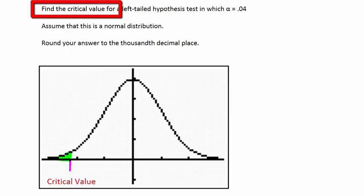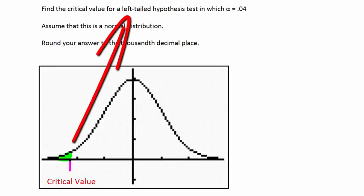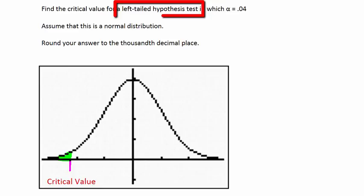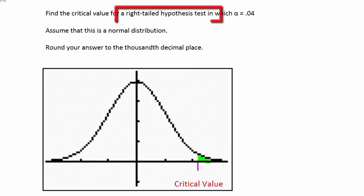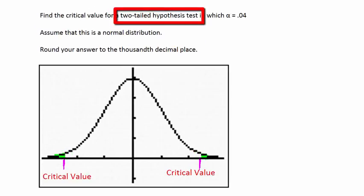When finding the critical value for a given alpha in the normal distribution, one needs to understand that the tail in which the hypothesis test is being performed will change the answer significantly. Hypothesis tests can be either left-tailed tests, right-tailed tests, or two-tailed tests.